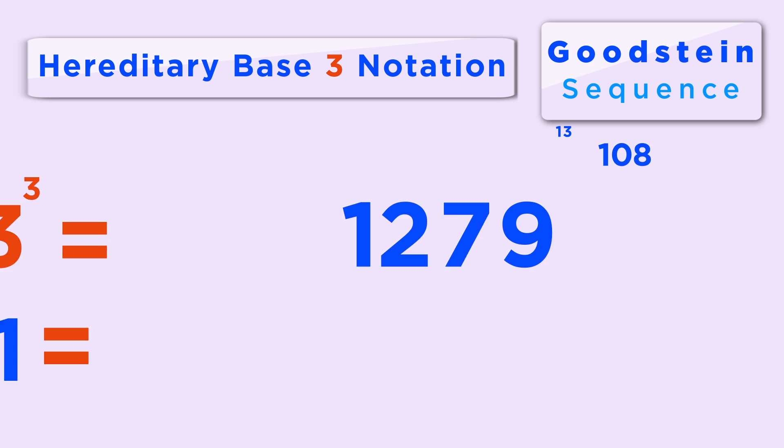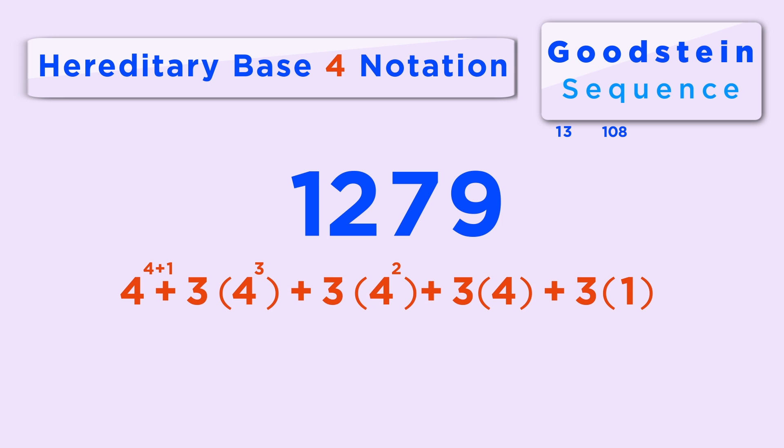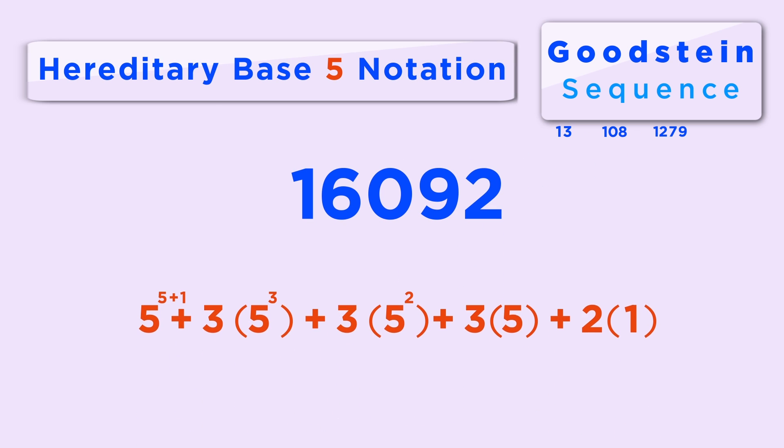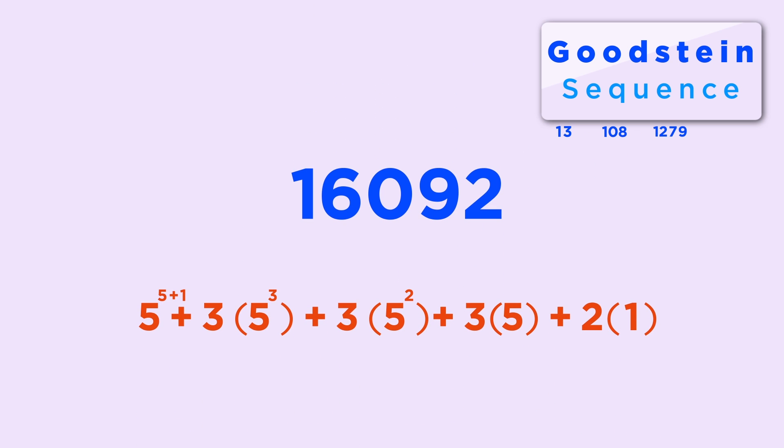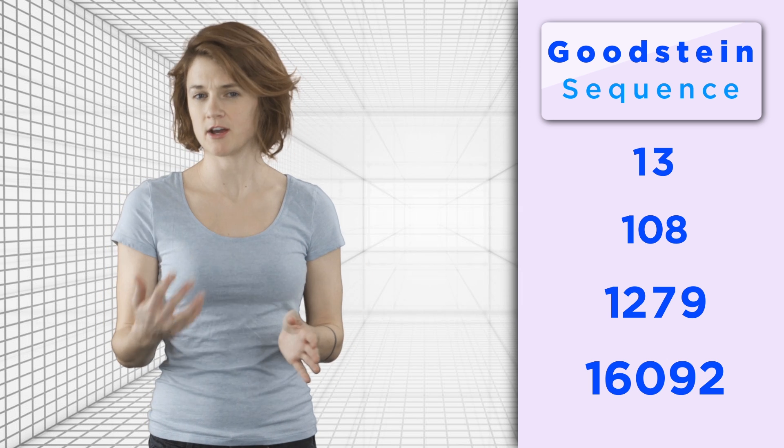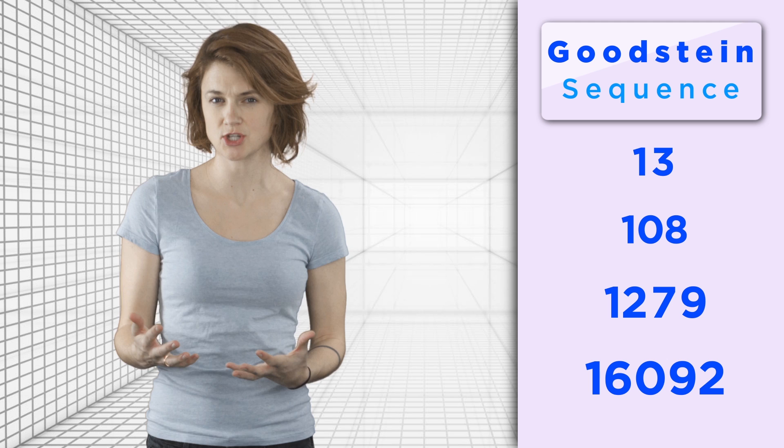The result is 1,279. Now, write 1,279 in hereditary base 4 notation. Can you guess what comes next? Convert all the 4's to 5's and subtract 1. The result is 16,092, which we write in hereditary base 5 notation. Now we have the first 4 terms of this Goodstein sequence. 13, 108, 1,279, 16,092.